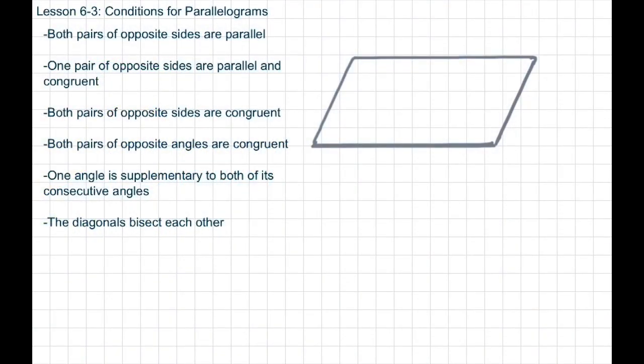Welcome back. Today I'm going to be talking about lesson 6S3 and it says conditions for parallelograms. What that means is that there's a set of theorems or a set of requirements that every parallelogram needs to be a parallelogram. If you look up to this list I have on the left, it gives a list of requirements of things that are needed for a shape to be considered a parallelogram.